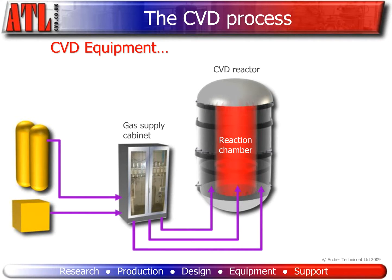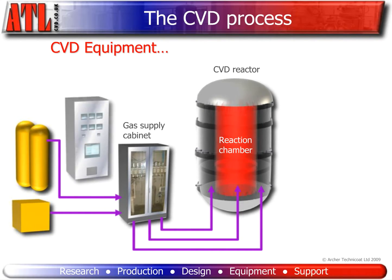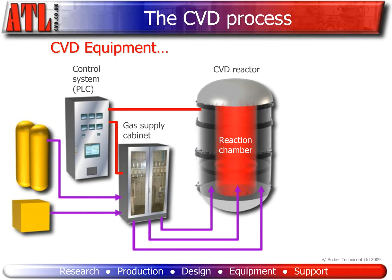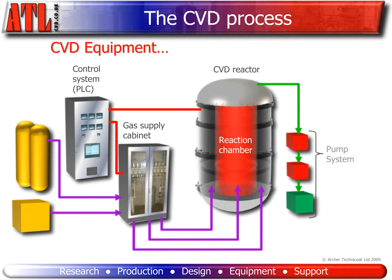A control system — programmable logic controller, or PLC for short — controls both the gas supply and the CVD reactor. It also acts as a safety system. The waste gases from the CVD process are normally drawn out using a series of pumps, which also reduce the reaction chamber pressure required for the process.